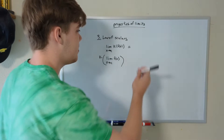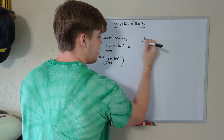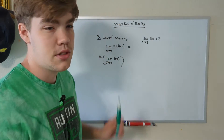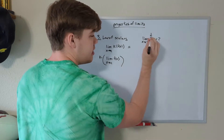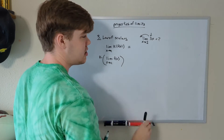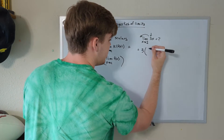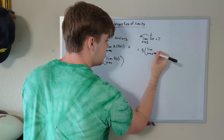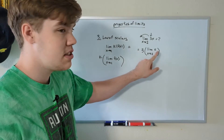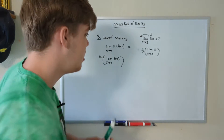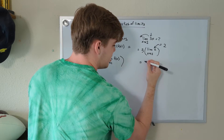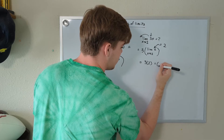Let's use an example. Let's say we have the limit as x approaches 2 of 3x. Using the law of scalars, we can pull the 3 to the front since it's multiplying our entire function. So this turns into 3 times the limit as x approaches 2 of x. Our second limit law states that if our function is just x, whatever x is approaching is the limit. So this limit equals 2, which means the answer is 3 times 2, which equals 6.